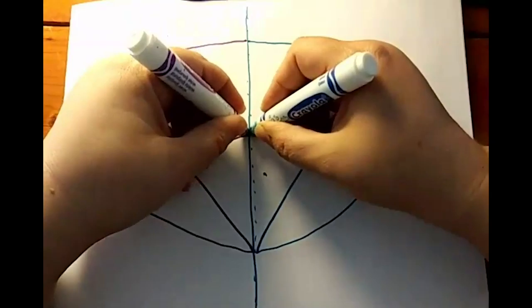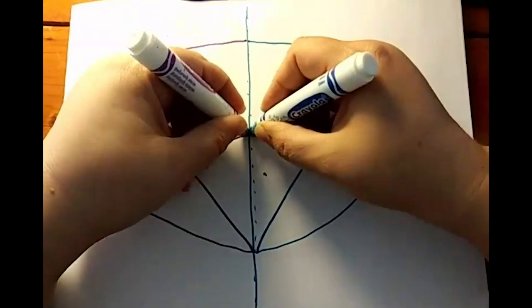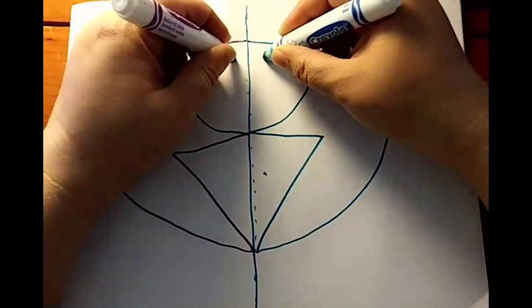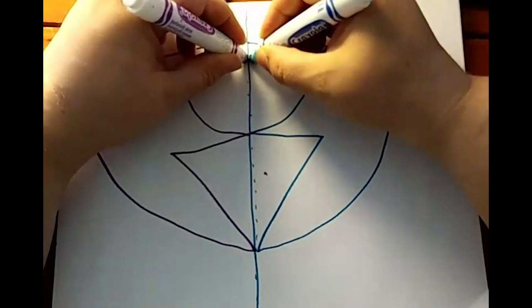So when you breathe in, you move away from your line. And when you breathe out, you come back to your line. And you try to do the same thing on both sides of the line. Go away from the line, breathe in. And as you come back to the line, breathe out.